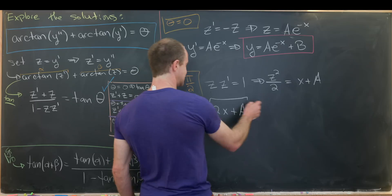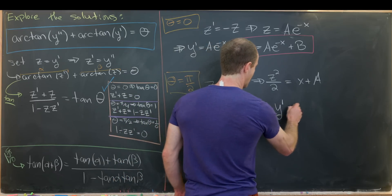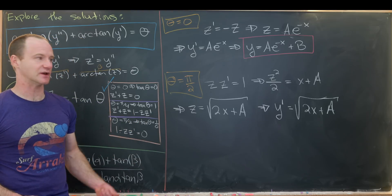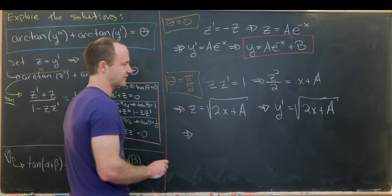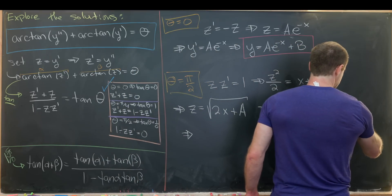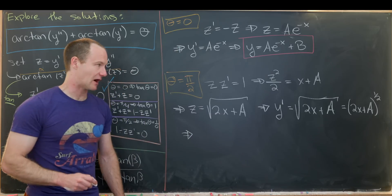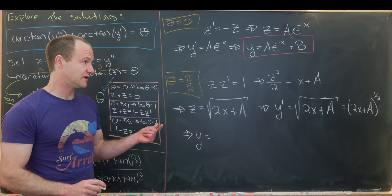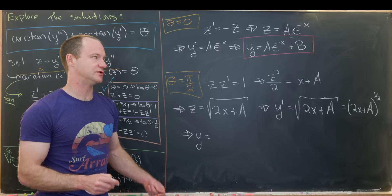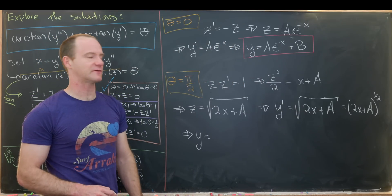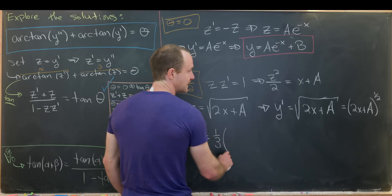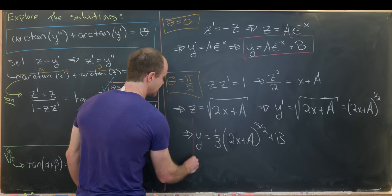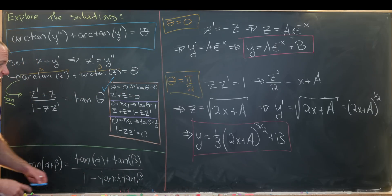Recalling that z = y', we have y' = √(2x + a). Integrating both sides, and viewing the right side as (2x + a)^(1/2), we use the power rule: the new exponent is 3/2, we multiply by 2/3 (the reciprocal), and divide by 2 for the coefficient of x. This gives y = (1/3)(2x + a)^(3/2) + B as the solution for θ = π/2.